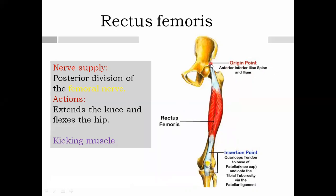The rectus femoris has two heads: the straight head and the reflected head. The straight head arises from the anterior inferior iliac spine, and the reflected head arises from just above the groove of the acetabulum. These two bellies fuse and insert into the base of the patella. The nerve supply — like all muscles of the anterior compartment — is the posterior division of the femoral nerve. The action is extension of the knee, and additionally, rectus femoris is a flexor of the hip. Because it is extensively used in kicking, it is also called the kicking muscle.